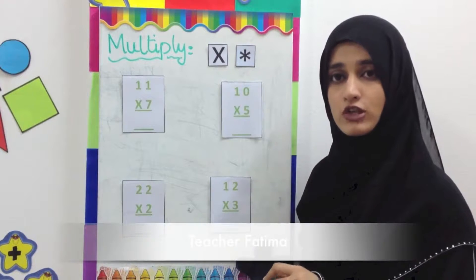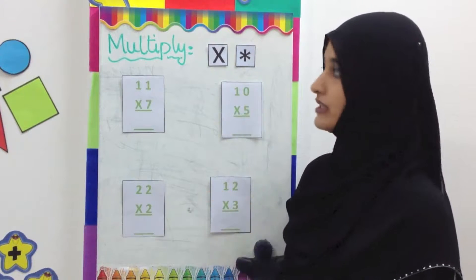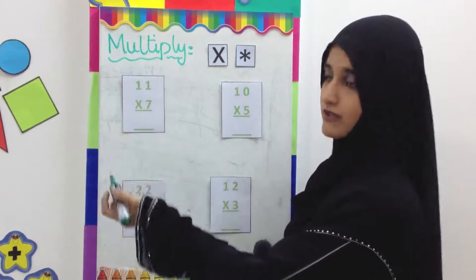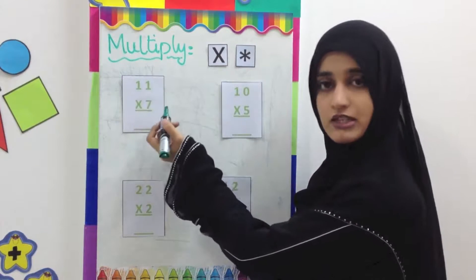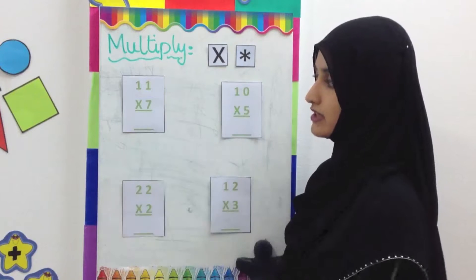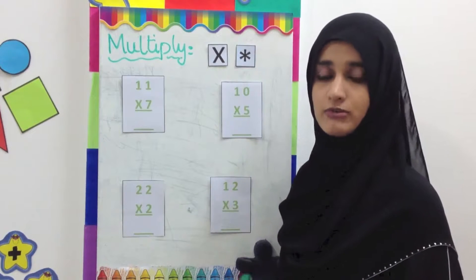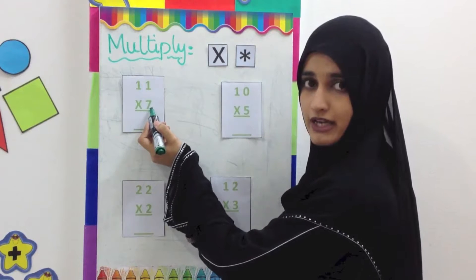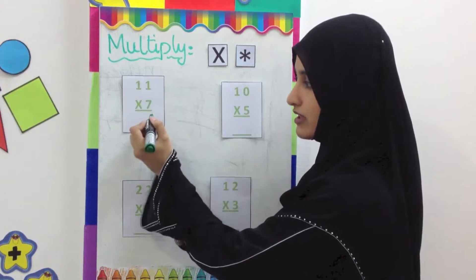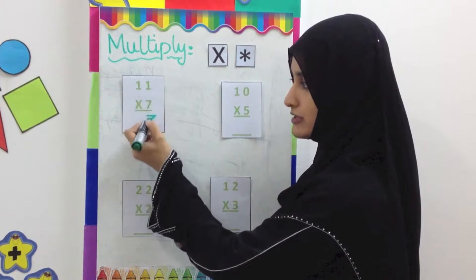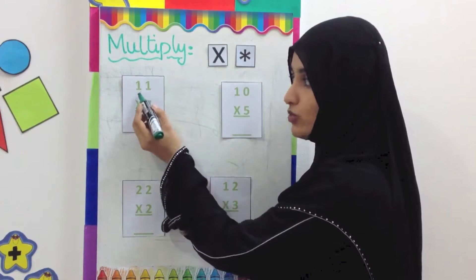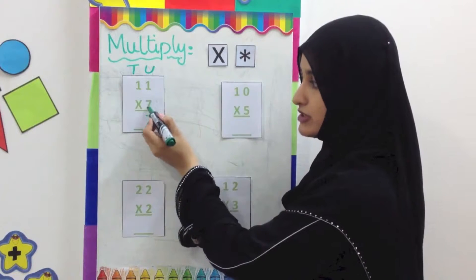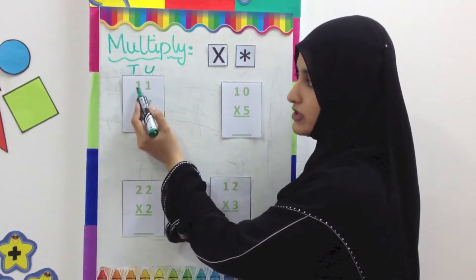Like addition and subtraction, we can solve multiplication questions vertically. You can see here we have four questions written vertically. When you write them vertically, we put the units together and the tens together. Here we have a two-digit number and the other number we are multiplying is a single-digit number, which stays in the units place. Whenever we multiply two numbers together, you need to multiply the number in the units place with the number in the units place.